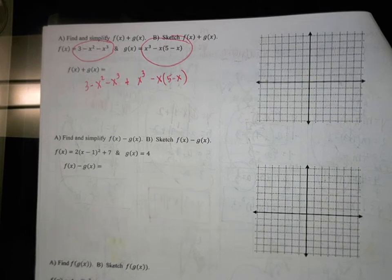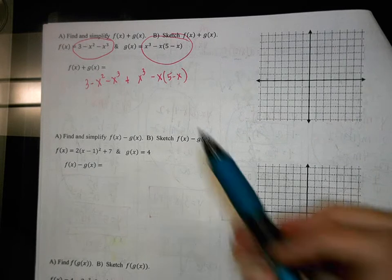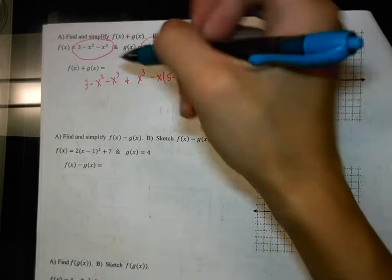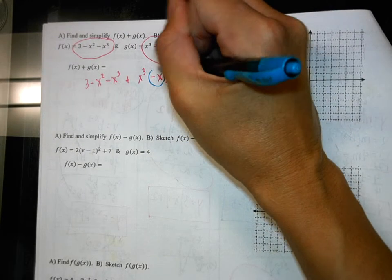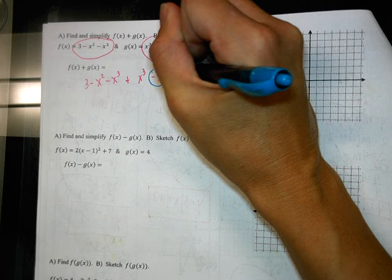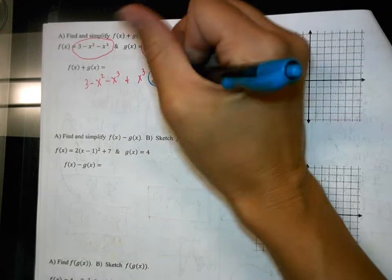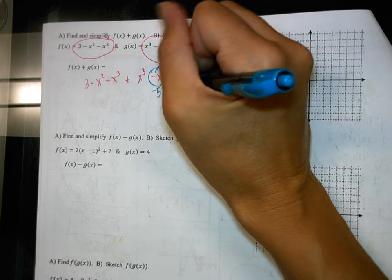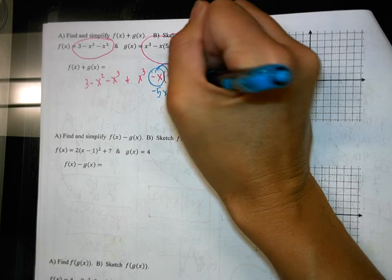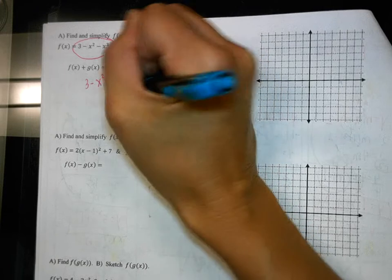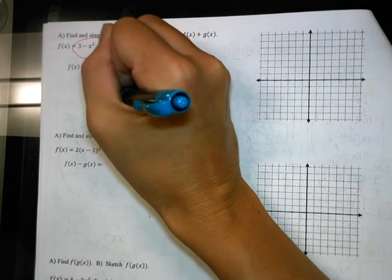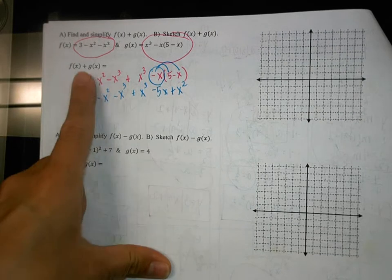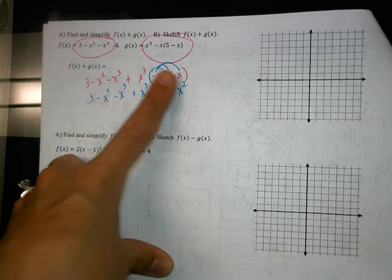And then all we're going to do is simplify. Order of operations, though, we need to get rid of this parentheses first. And so how I do that is we take, this is actually a negative x and we're going to distribute it through. So negative x times 5 is negative 5x and negative x times negative x is a positive x squared. And then I'm going to go ahead and rewrite the rest of this. So I just brought everything else down and I just distributed that through.